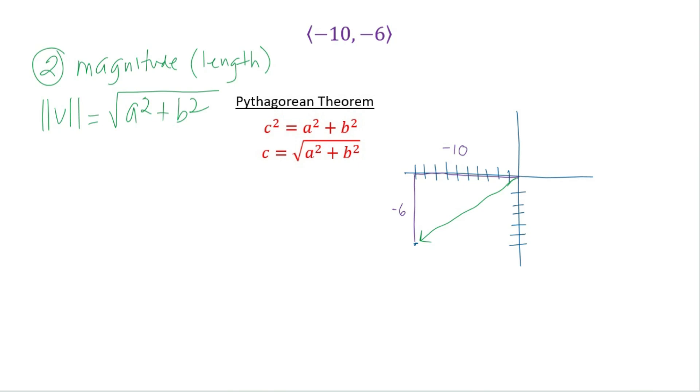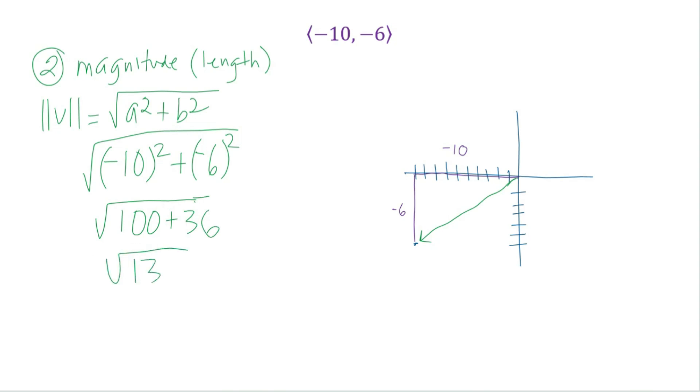So our a is going to be our x-coordinate. So we have negative 10 squared plus negative 6 squared. And we're going to take the square root of that. So we have the square root of 100 plus 36. And that would be the square root of 136,